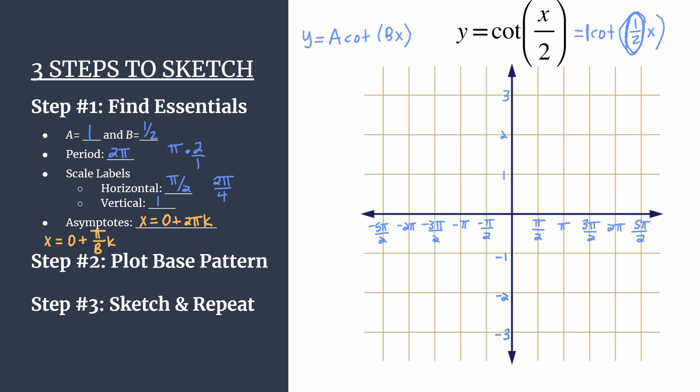So now we're ready for step 2. We have everything organized, and let's recall the base pattern for cotangent graphs. It goes asymptote, upper curve shaping point, 0 or x-intercept, and lower curve shaping point. It's the graph that looks, in general, like that.